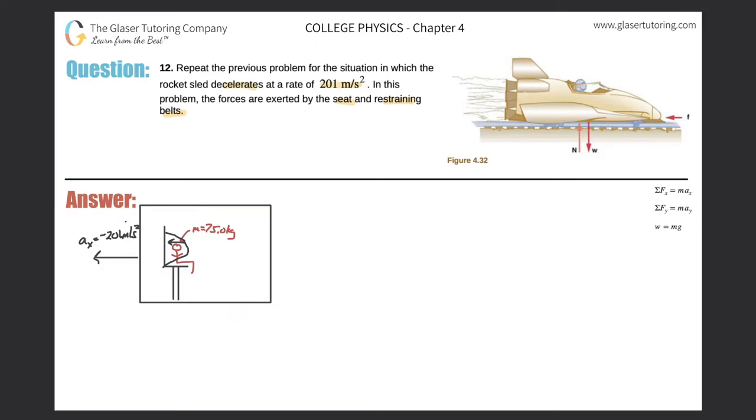So now how can we calculate this force arrow? Well, simple, right? Let's remember the sum of all the force in the x direction equals the mass of the object multiplied by the acceleration of that object in that dimension. So here we have the sum of all the forces in the x direction, will equal the mass of the individual, so 75.0, multiplied by that acceleration of negative 201 meters per second squared.